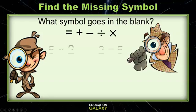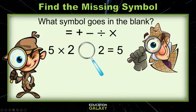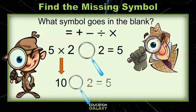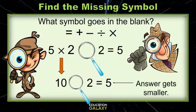What symbol goes in the blank? 5 times 2, something, 2 equals 5. Let's use our clues to help us. 5 times 2 equals 10, so 10 something 2 equals 5. We can see that our answer is getting smaller, so what symbol needs to go in the blank? If you guessed division, you are correct, because 10 divided by 2 equals 5.